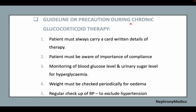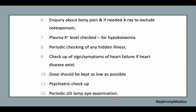Guidelines and precautions during chronic glucocorticoid therapy: patients must always carry a card with written details of the therapy and be aware of the importance of monitoring blood glucose and urinary sugar levels for hyperglycemia. Weight should be checked periodically for edema, and regular BP checks should be done to detect hypertension. Inquiry about bony pain and plasma potassium levels should be monitored for hypokalemia. Periodic checking for hidden illness, signs of heart failure in cardiac patients, psychiatric checkup, and periodic slit-lamp examination should be performed. The dose should be kept as low as possible.